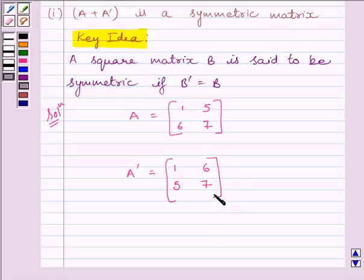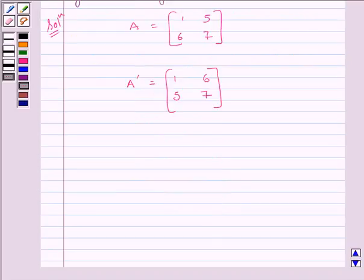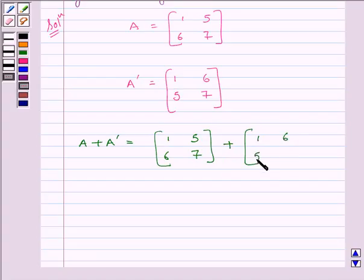Now we will find A plus A transpose. So we can write A plus A transpose is equal to matrix 1, 5, 6, 7 plus matrix 1, 6, 5, 7.